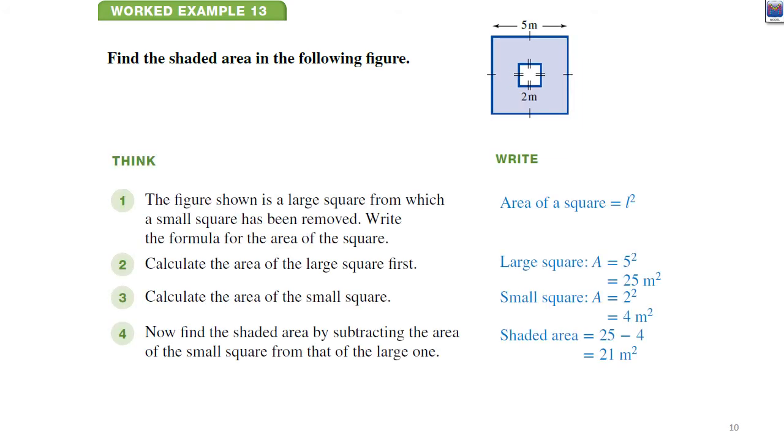Here's our example. Area of a square is length squared. So the large square would be 5 times 5 is 25. The area of the small square, 2 times 2 because it says it's 2 meters. 2 times 2 is 4. And we subtract it. So the shaded area, see how we've written it out here? Shaded area equals 25 minus 4 is 21 square meters.